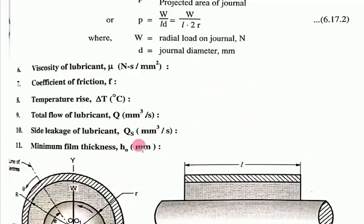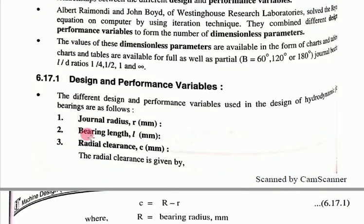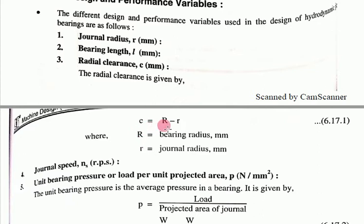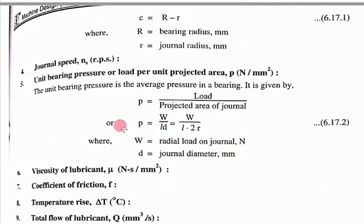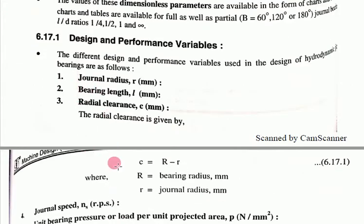The design and performance variables include: journal radius R, bearing length L, radial clearance C (where C = R_bearing − r_journal), journal speed Ns in revolutions per second, and unit bearing pressure P = W/(L·D) in Newton per mm². Also included are viscosity of lubricant (mu, in N·s/mm²), coefficient of friction, temperature rise (delta T), and total flow of lubricants.